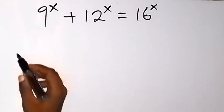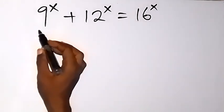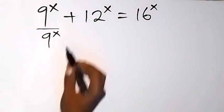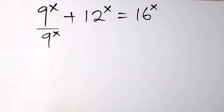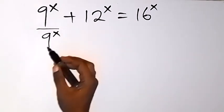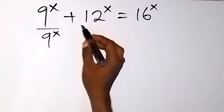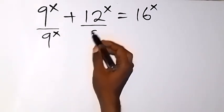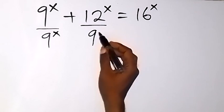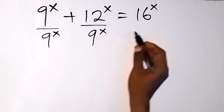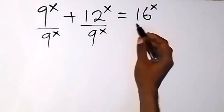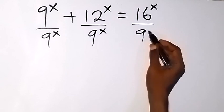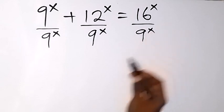From here, let's divide through by 9 raised to power x. So we have 9 raised to power x divided by 9 raised to power x, then 12 raised to power x divided by 9 raised to power x, equals to 16 raised to power x divided by 9 raised to power x.